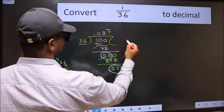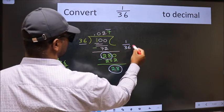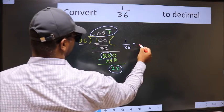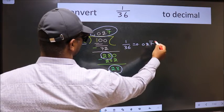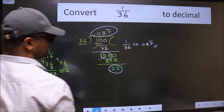Therefore, the decimal of 1 by 36 is 0.027 with a bar on this number, which is our answer.